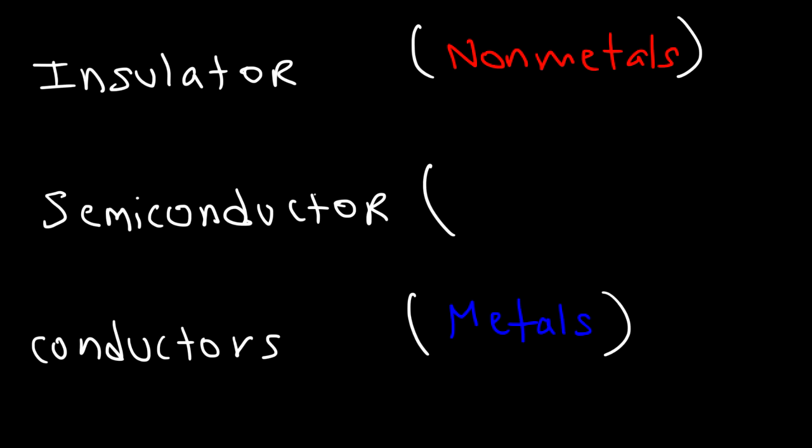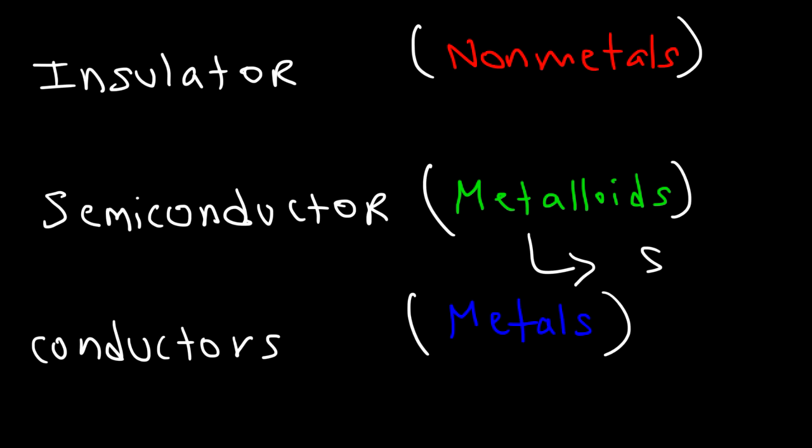Semiconductors are basically metalloids. They don't conduct electricity as well as conductors, but they do conduct a small amount of electricity. Some good examples of naturally occurring semiconductors are silicon and germanium. Germanium conducts electricity better than silicon, but both are semiconductors — they conduct only a small amount of electricity.